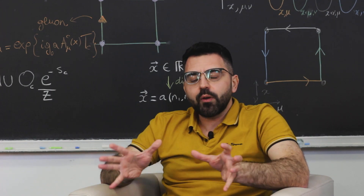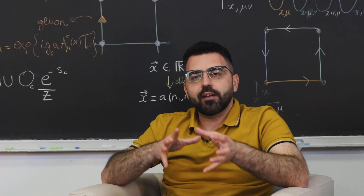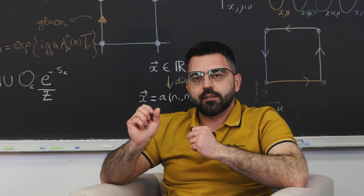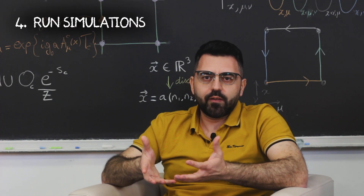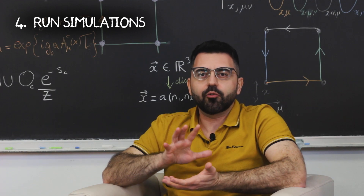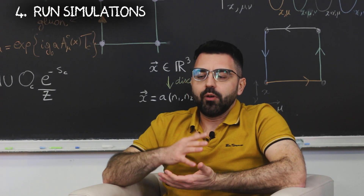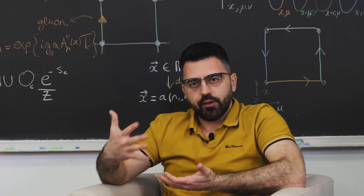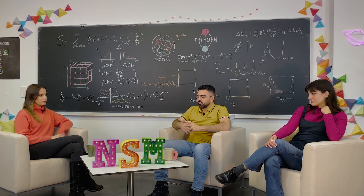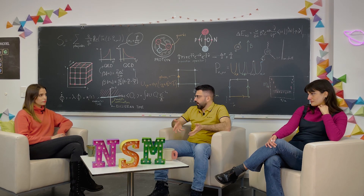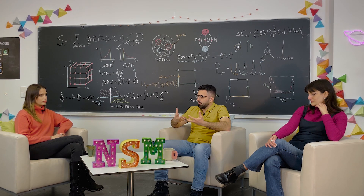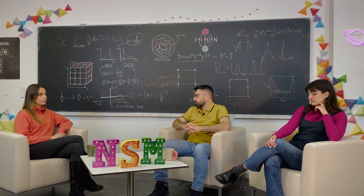Once we have our theory, our code, and our computer time, we are ready to run our simulations. In practice, we need to choose some parameters. We need to run our simulations for a very long time to get our raw data, and then we need to analyze and interpret them in order to get the physical observable that we are interested in.